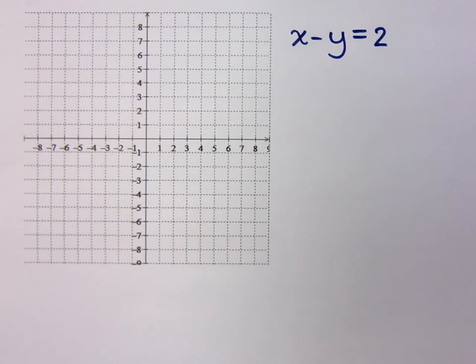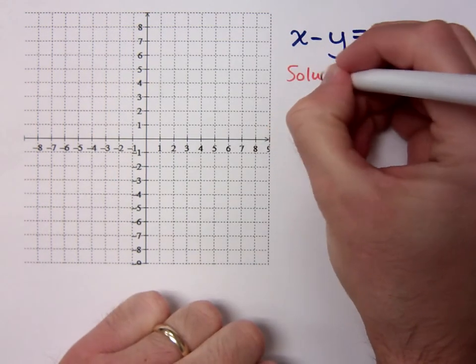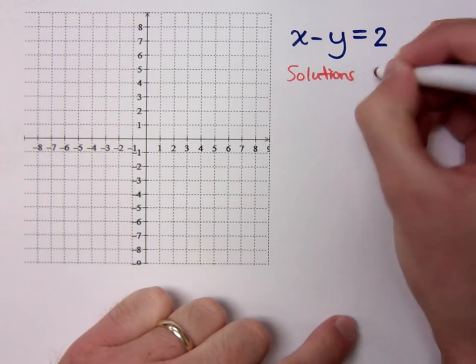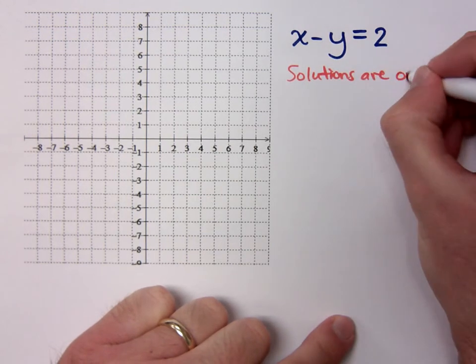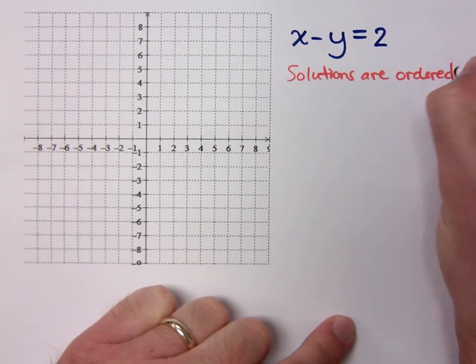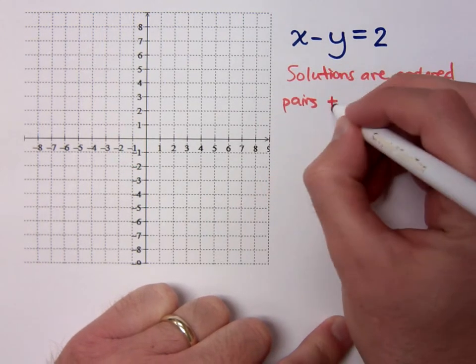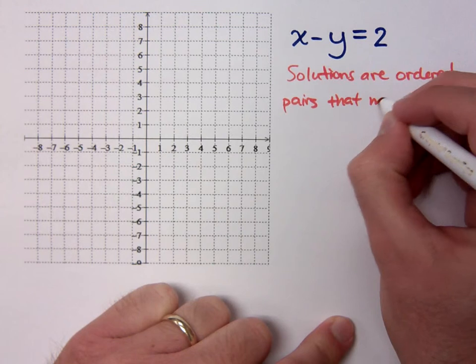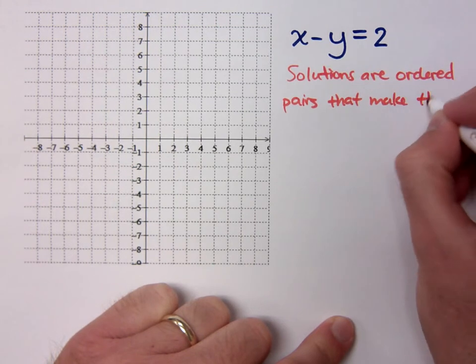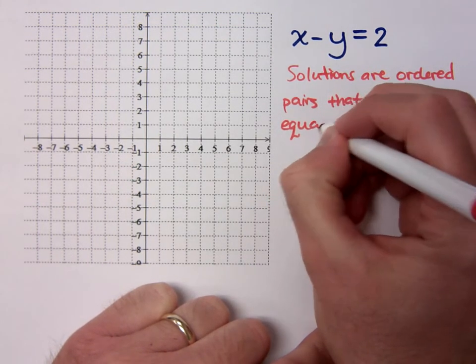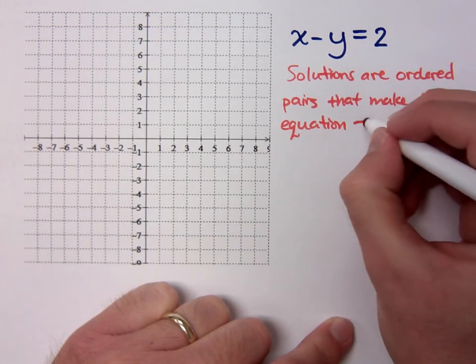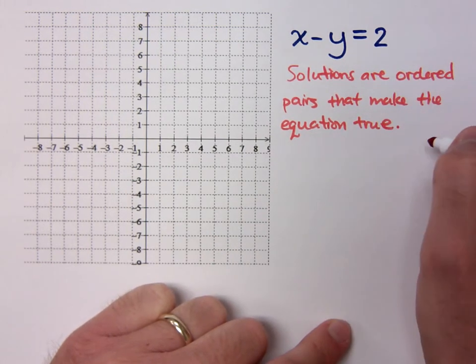Before, we'd say this. We said that solutions are ordered pairs that make the equation true. Solutions are ordered pairs that make the equation true.